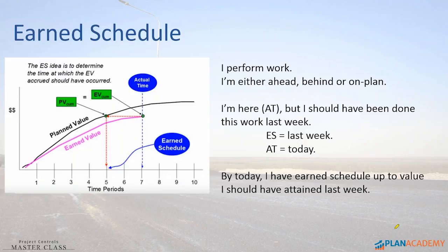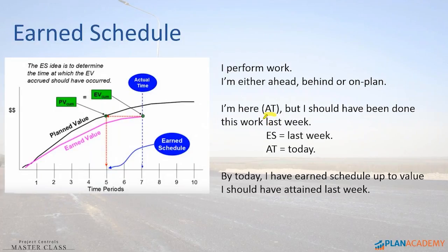AT — you're going to see AT used a lot — that's Actual Time. Basically think of it like your data date. Here's my status date. When I look at my baseline, I should have accomplished the stuff I'm doing right now — like this week — I should have accomplished it last week. So basically, my Earned Schedule says: Earned Schedule at this moment is last week's work. Today, I've only earned up to where I should have been last week. By today, I've earned schedule up to the value I should have attained last week.